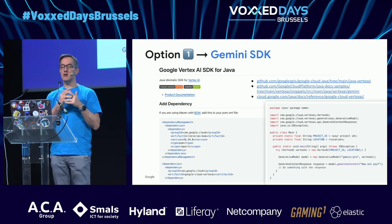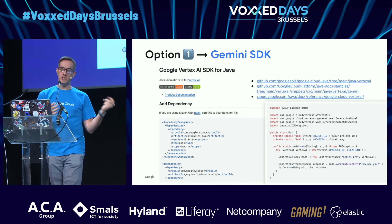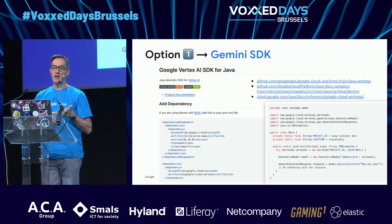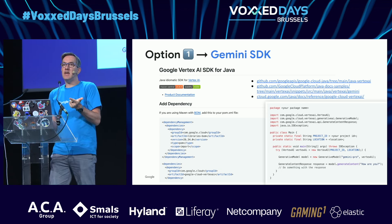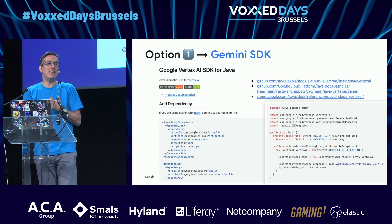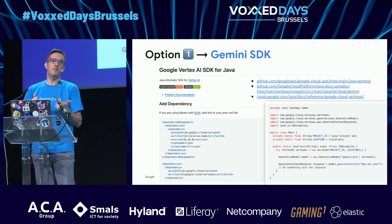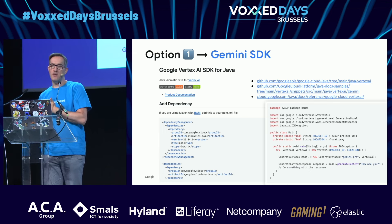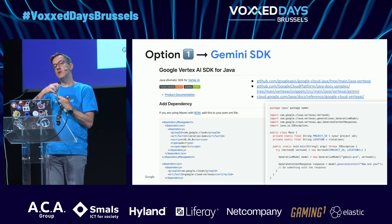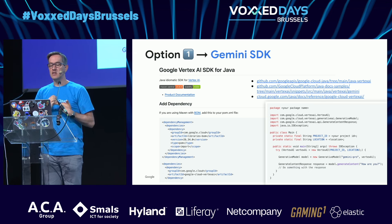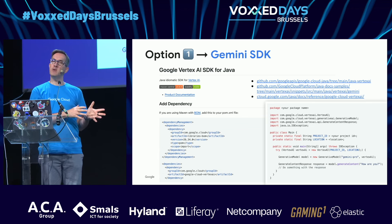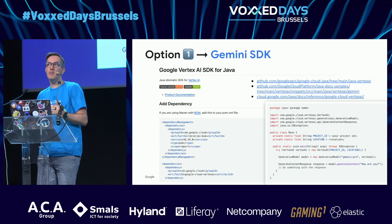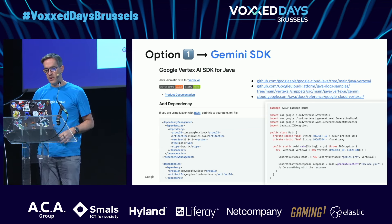There are three approaches: REST, the Gemini SDK, and LangChain4J. Usually the Gemini SDK has the latest features before LangChain4J, because LangChain4J actually bundles the Gemini SDK. There are things you can do with the Gemini SDK that you can't yet do with LangChain4J.